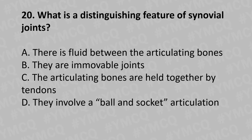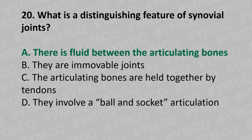Moving to our 20th question: What is the distinguishing feature of a synovial joint? Option A: there is a fluid between the articulating bones, Option B: they are immobile joints, Option C: the articulating bones are held together by tendons, Option D: they involve a ball and socket articulation. The answer is Option A: there is a fluid between the articulating bones.